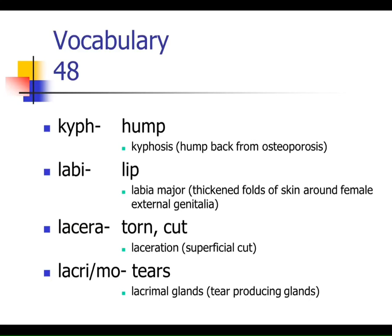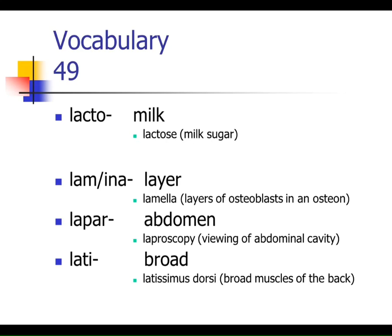Lacrimal refers to your tears. Your lacrimal glands are your tear producers, and you've seen the lacrimal bone, which sits near the lacrimal duct. Lacto means milk — pretty straightforward. Lactose is milk sugar. Lamina, you've seen lamella — that word meaning layer. Lapar means the abdomen. If you have a laparoscopy, you are having a viewing of your abdominal cavity.